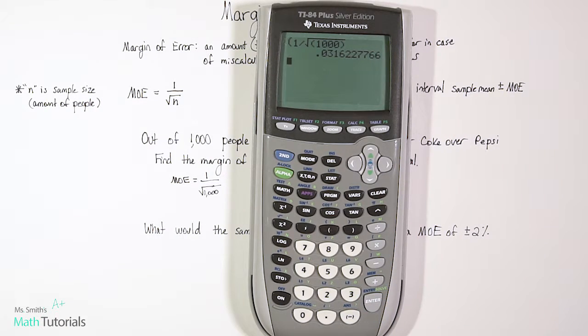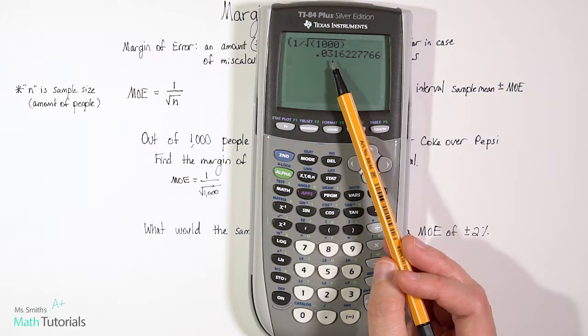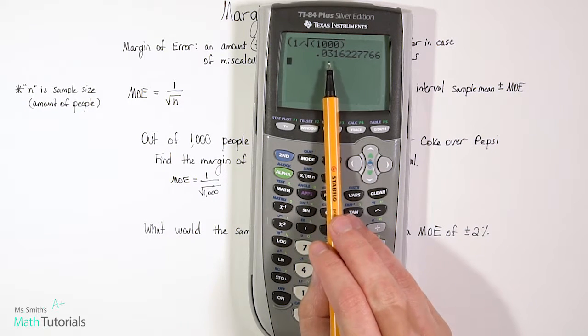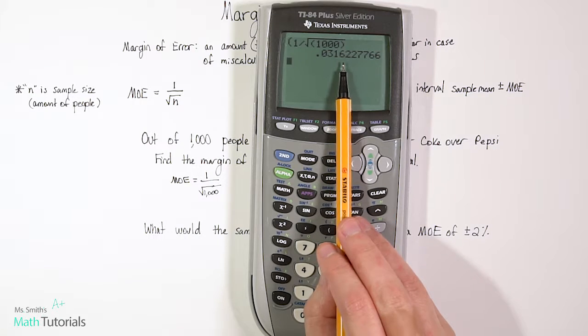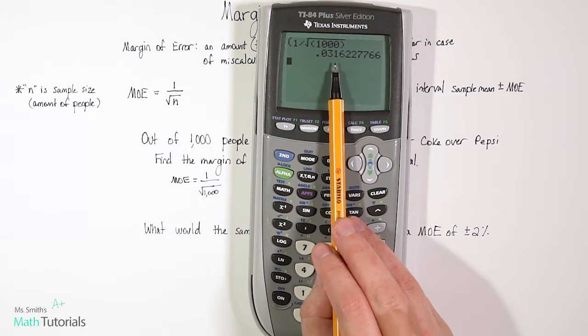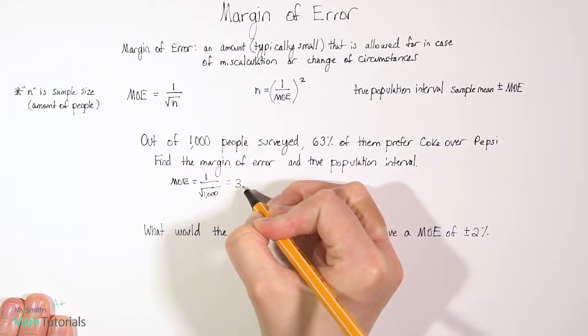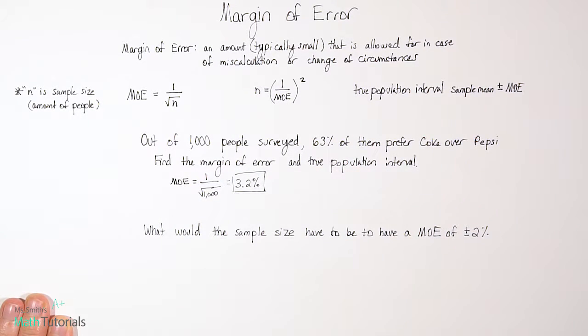So let's turn that decimal into a percent. So remember, in order to take a decimal into a percent, we take the decimal and we move it over to the right two places. So let's just do a percent rounded to the nearest tenth. So if this is 0.0316, we're going to take that decimal, move it over two places. So now we've got 3.2, because that six is bigger than five. So we bump that one up to two. So we've got a margin of error of 3.2%. That's our margin of error.